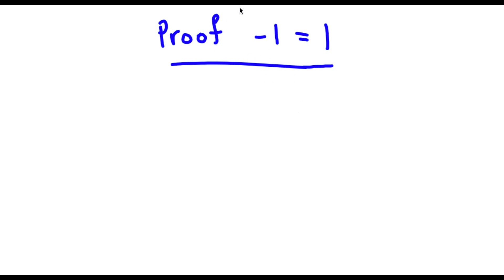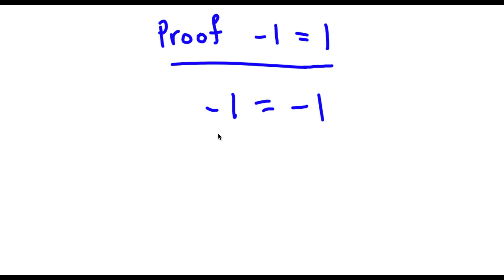Alright, so I'm going to prove that negative 1 is equal to 1. Let's first start off with negative 1 is equal to negative 1 — this is a true statement because any number is equal to itself. Now, negative 1 is the same thing as negative 1 to the power of 1, since any number to the power of 1 is equal to itself.